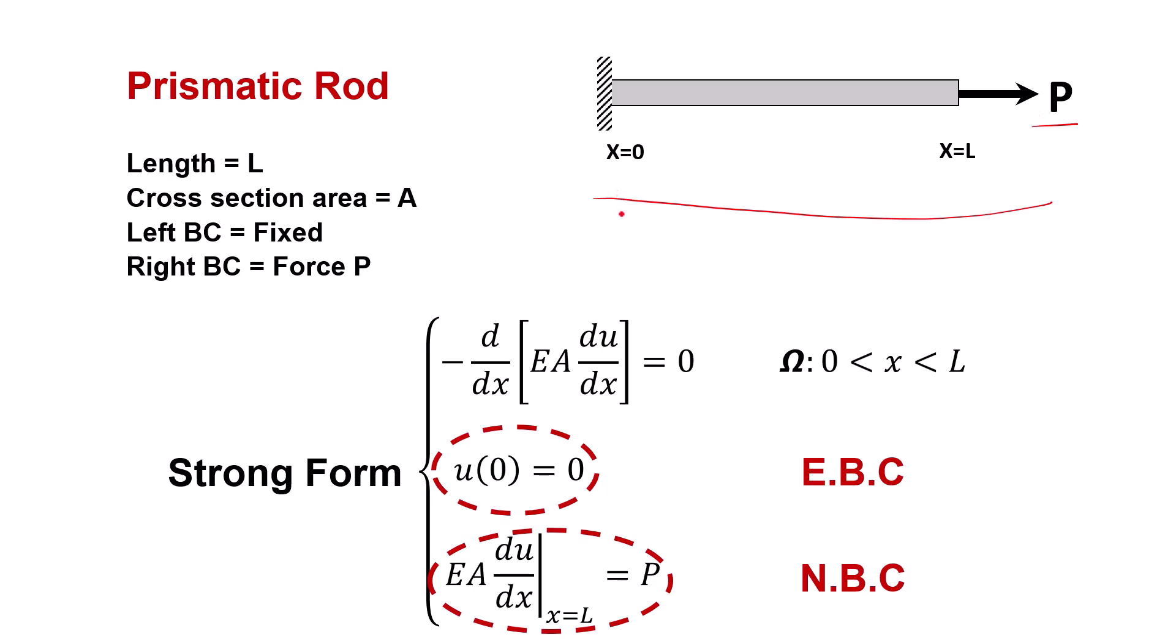The strong form of this problem includes the governing differential equation, along with two boundary conditions. An essential boundary condition at the left end, or x equal to 0, which is u(0) is 0, and it is an EBC. And the natural boundary condition at the right end, EA du/dx at x equal to L is equal to P.